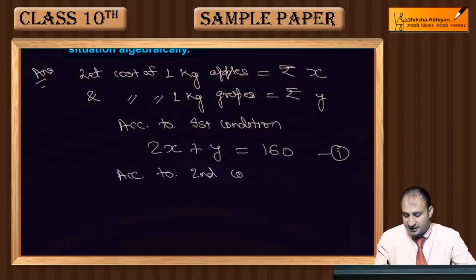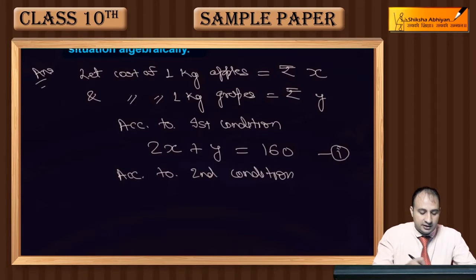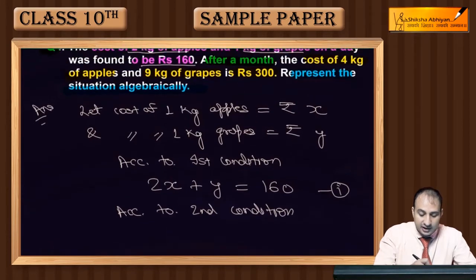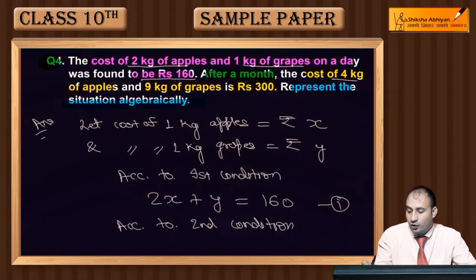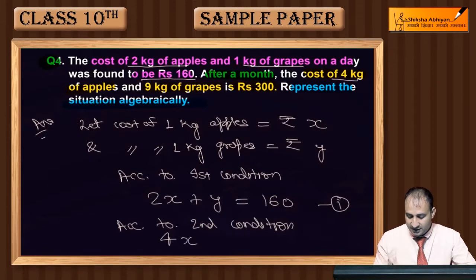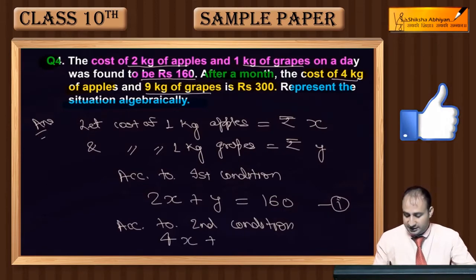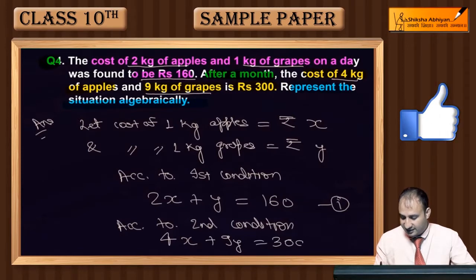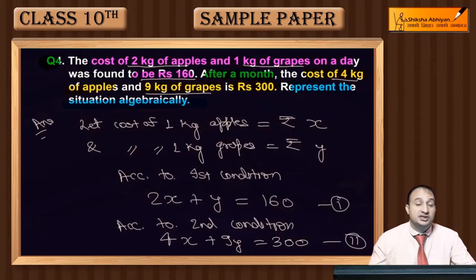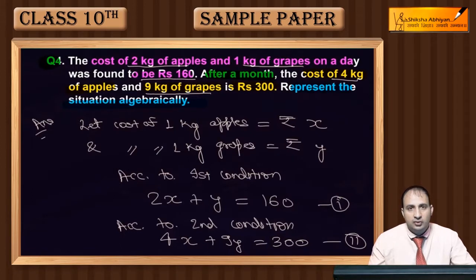According to the second condition: 4 kg apples cost 4x, plus 9 kg grapes cost 9y, and the total is 300 rupees. So the second equation is: 4x + 9y = 300. In this way, both conditions have been represented as equations.